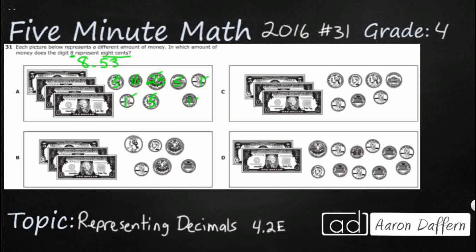Let's look at option B. We've got five, six, seven dollars. Looks like we've got three quarters worth 25 cents each, and one dime, and a few pennies. Starting with the largest: 25, 50, 75. Next, add the dime: 85. Then pennies: 86, 87. So close — 87 cents. This would have worked with just one extra penny.